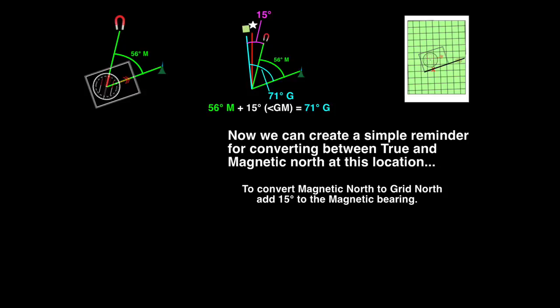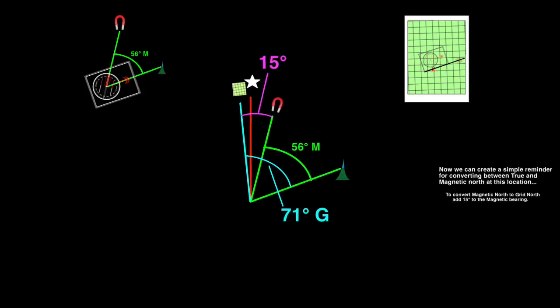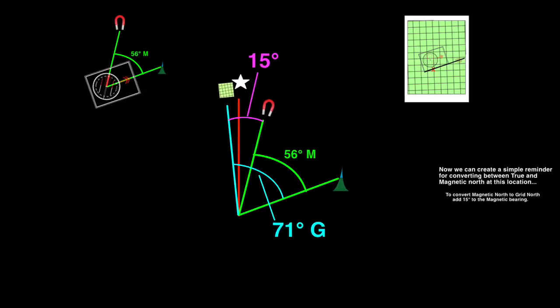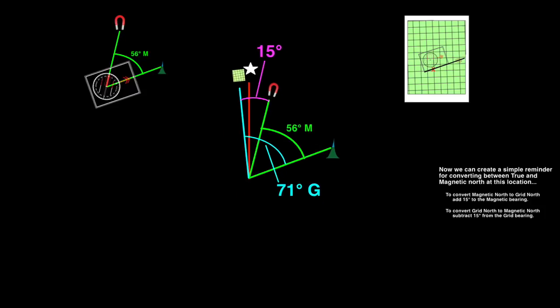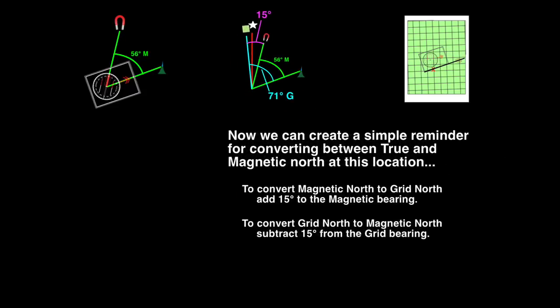But what about the reverse conversion from grid to magnetic north? Let's look at the diagram again. If we look at the angle from grid north to pointy peak, we see that it's bigger than the angle from magnetic north to pointy peak. It's bigger by 15 degrees. So to convert from grid north to magnetic north, subtract 15 degrees.